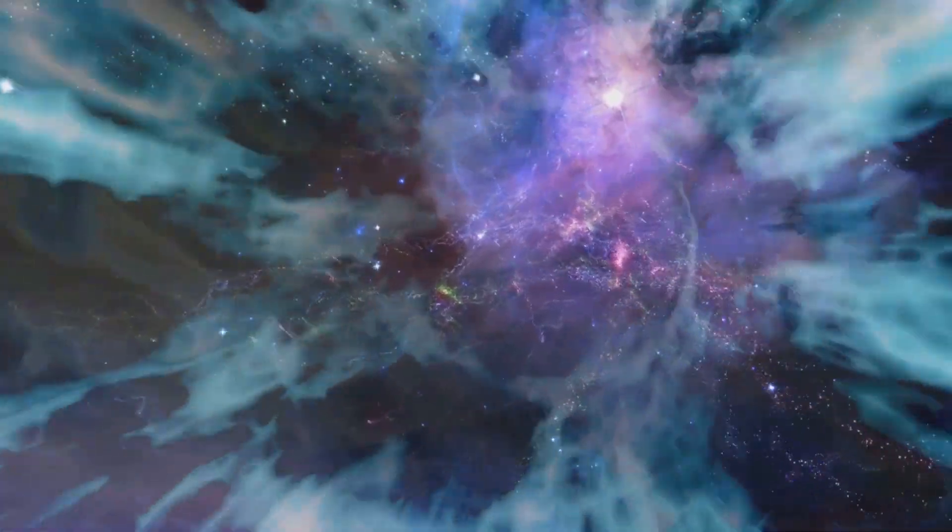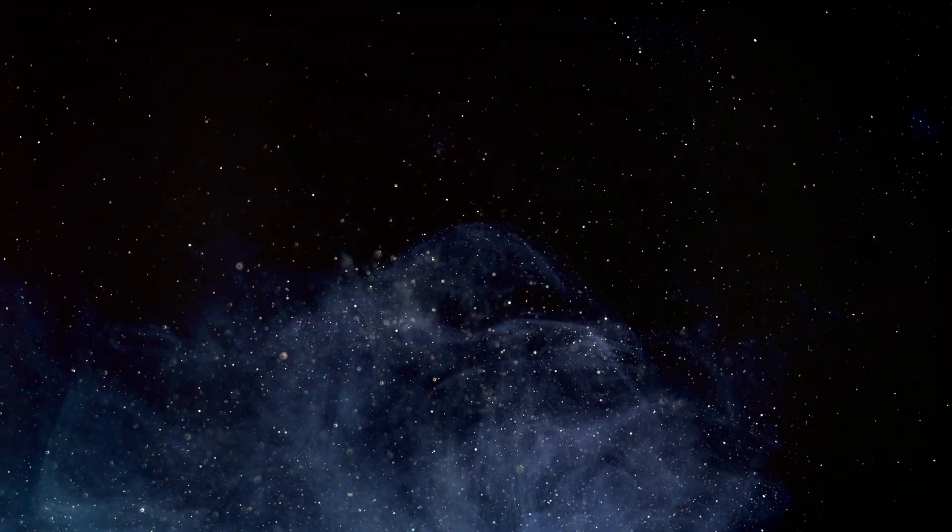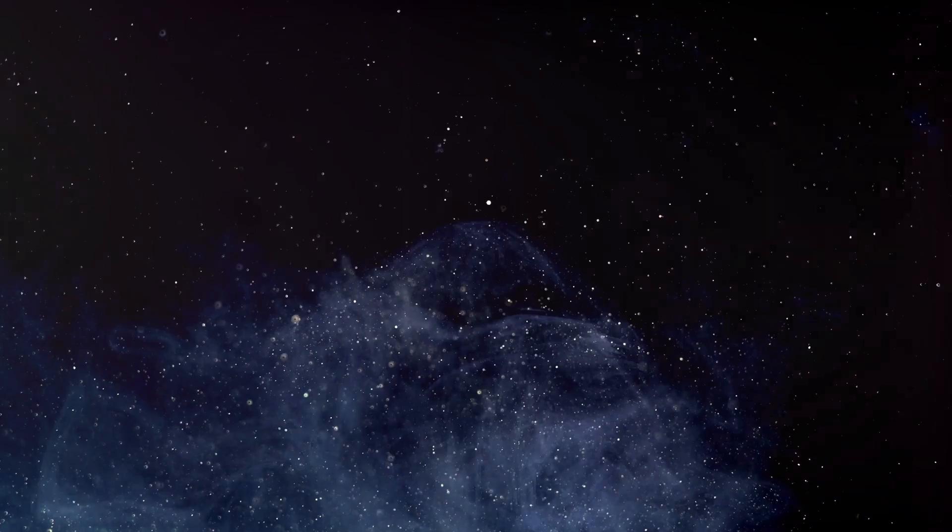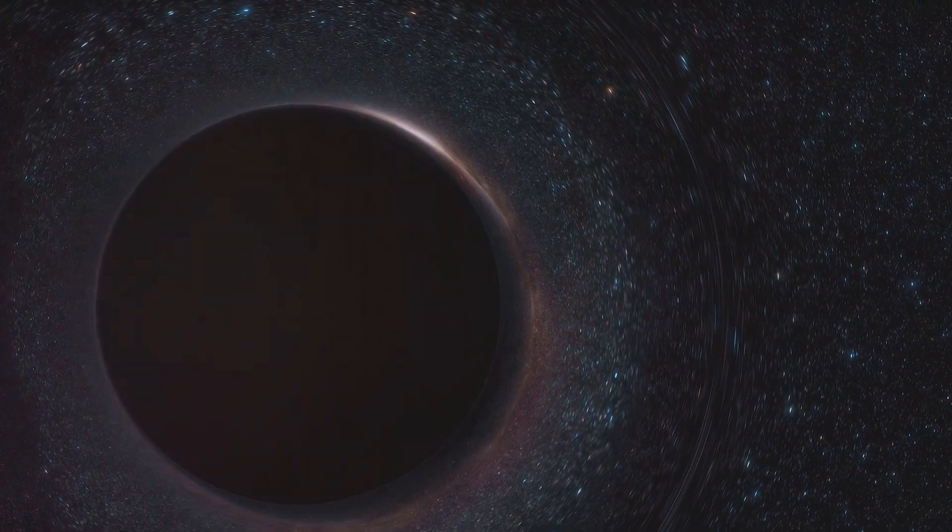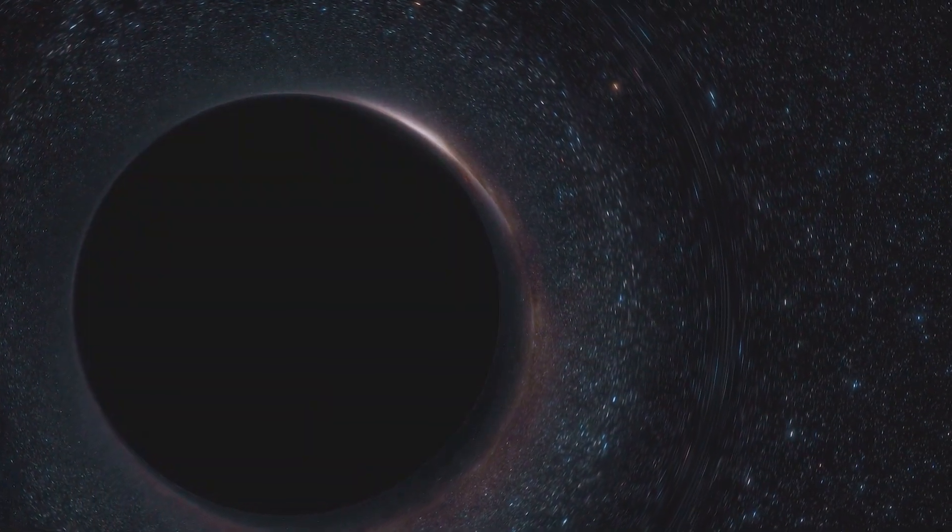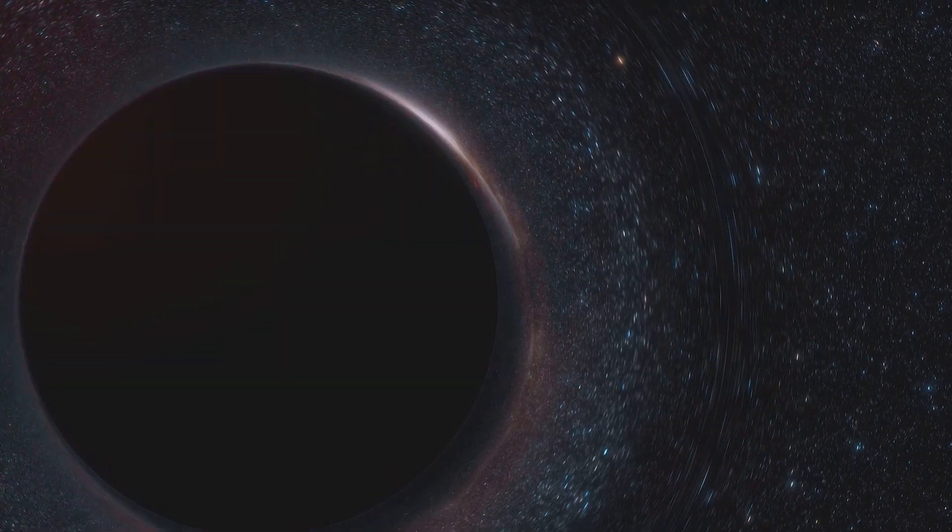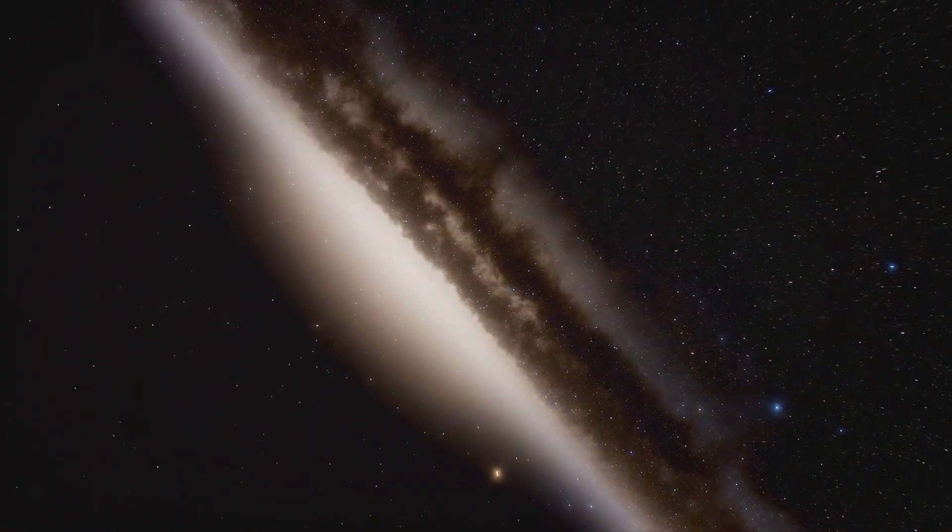While we can't see dark matter directly, we can map its distribution in the universe by observing its gravitational effects on visible matter. Astronomers use a technique called gravitational lensing to create these maps. Gravitational lensing occurs when the gravity of a massive object, like a galaxy cluster, bends the path of light traveling from more distant objects behind it.